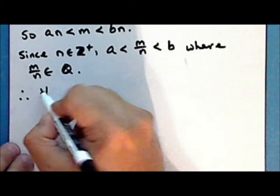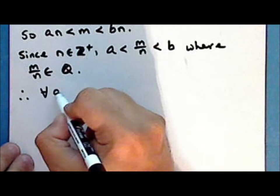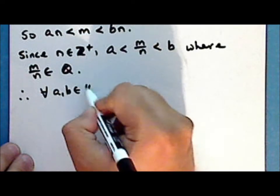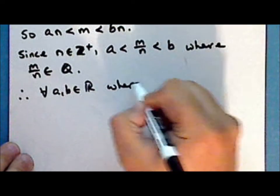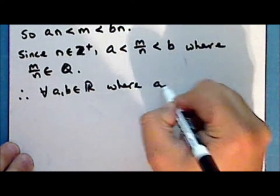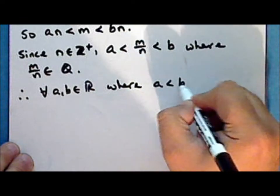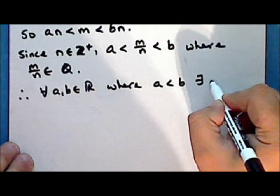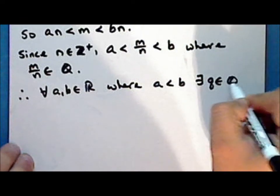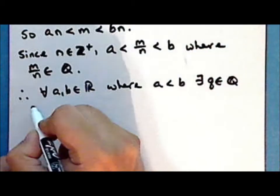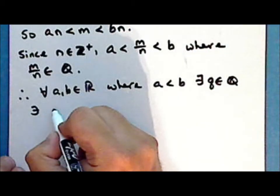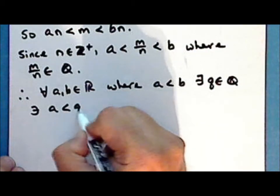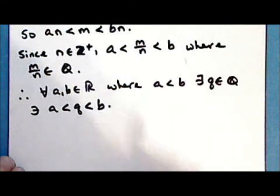And therefore, for every pair of real numbers A and B where A is less than B, there exists a rational number Q such that A is less than Q, which is less than B.